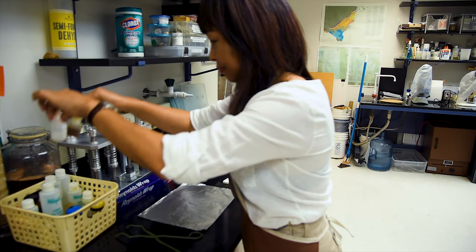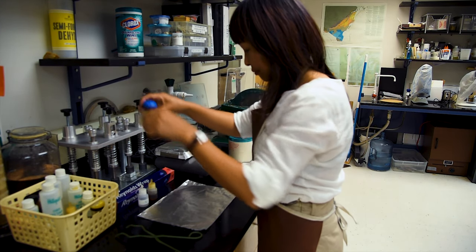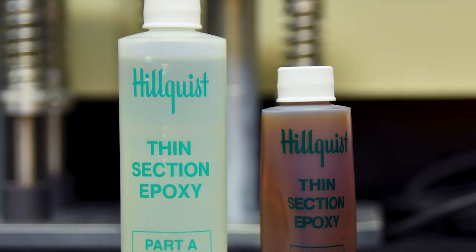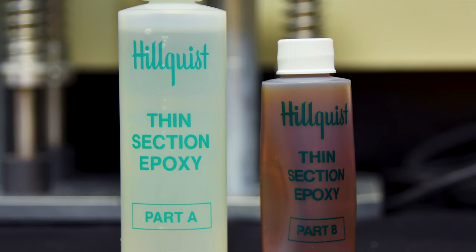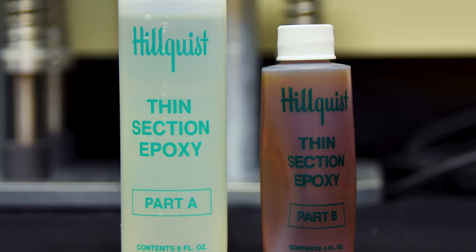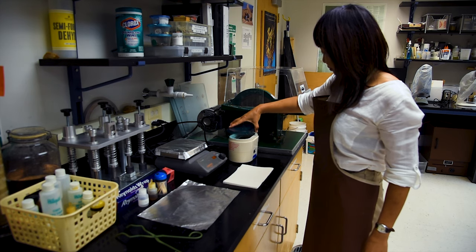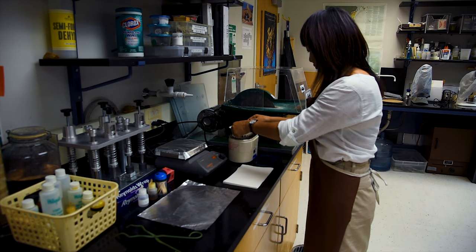There are a variety of different thin section epoxies that may be used, so you will need to familiarize yourself with the proper use of the epoxy that you have. Here at Nova, we are using a common thin section epoxy from Hillquist which comes in two parts, part A and part B, that must be mixed together before being applied to a sample chip and cemented to a glass slide. Mixing them together in the proper proportion results in a chemical reaction that hardens or cures the epoxy.